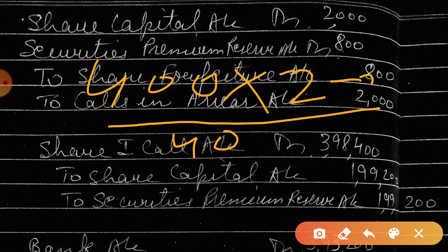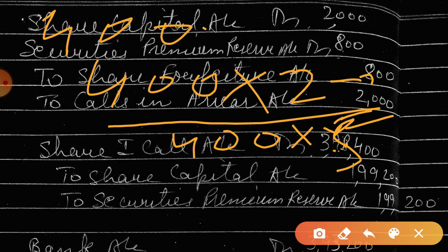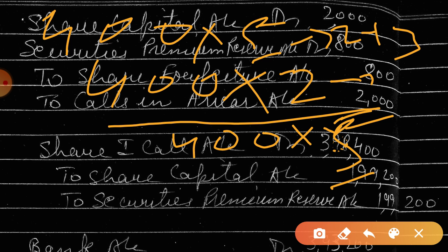Calls in arrear: 2000 — 400 into 5. Is this clear? 400 into 5. How did share capital come? This 5 is 2 plus 3 — the face value of the share which is called. Out of 10, 5 is called — and this 5 is the amount called at the time of allotment.